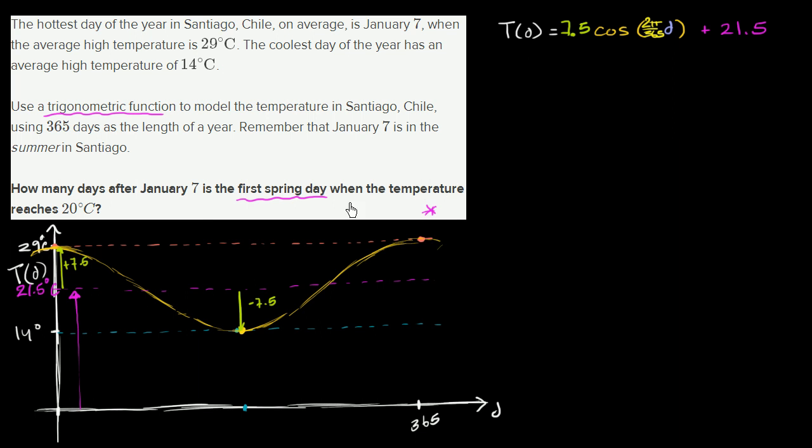But we weren't done. They want us to figure out how many days after January 7 is the first spring day when the temperature reaches 20 degrees Celsius. And I told you to be careful. Pay attention to this whole notion of the first spring day.